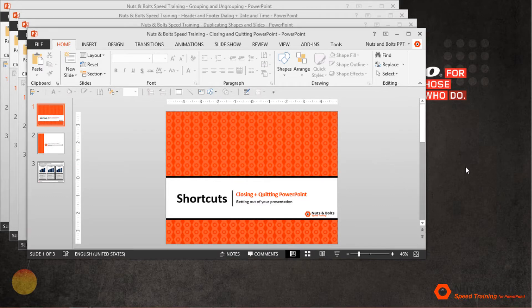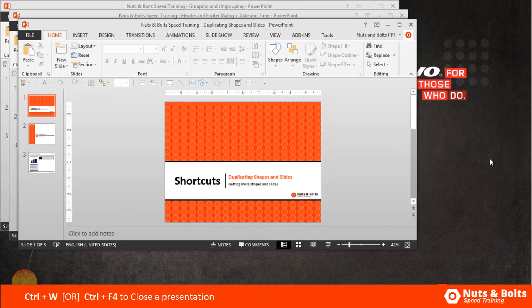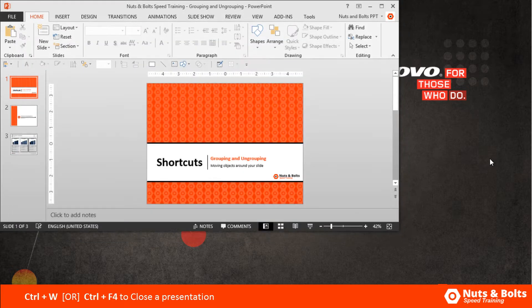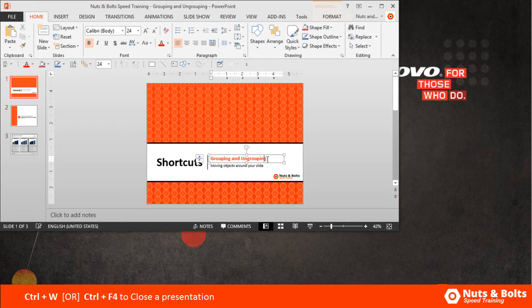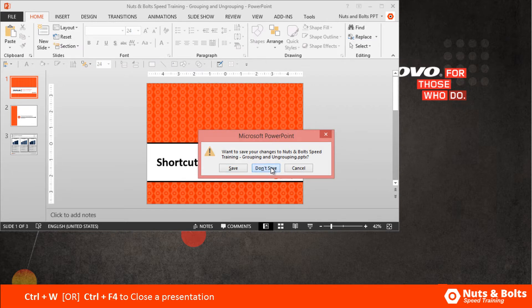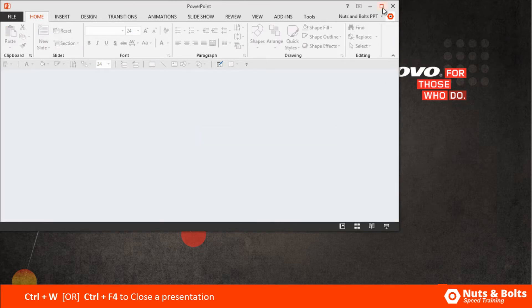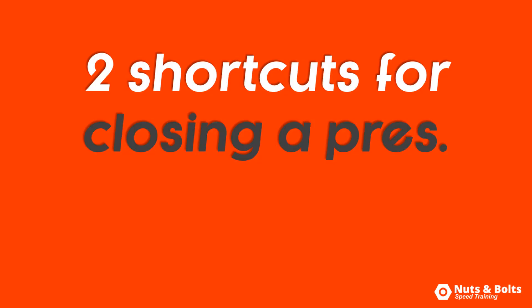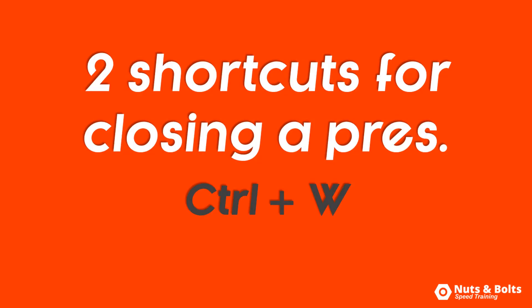If I select one of my open presentations, I can close it by hitting Control W on my keyboard. Control W will close the presentation but PowerPoint remains open. Alternatively, I could hit Control F4 to close the presentation. If you change something in your presentation and hit Control W or Control F4, you will be given a save warning. Those are two keyboard shortcuts for closing a presentation — Control W or Control F4 — but leaving PowerPoint open.